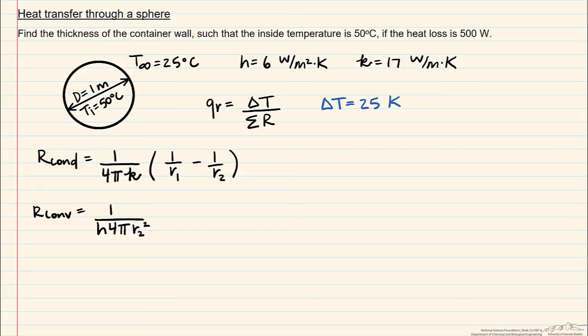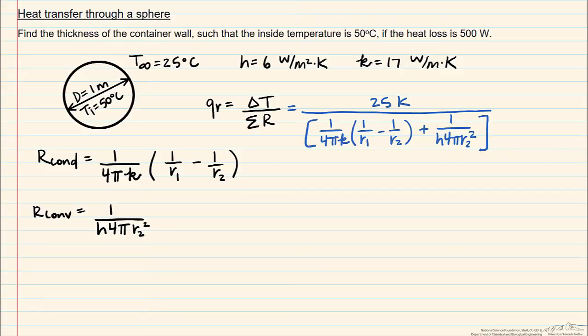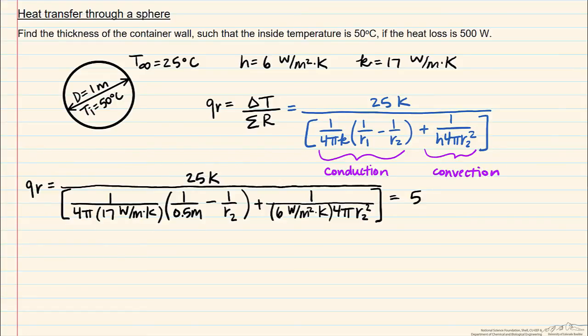Our q sub r is going to be equal to that delta T, 25 Kelvin, divided by the sum of these resistances. So first we're going to have the convective one, and now what we add to that is our convective resistance, and this has to equal 500 watts.